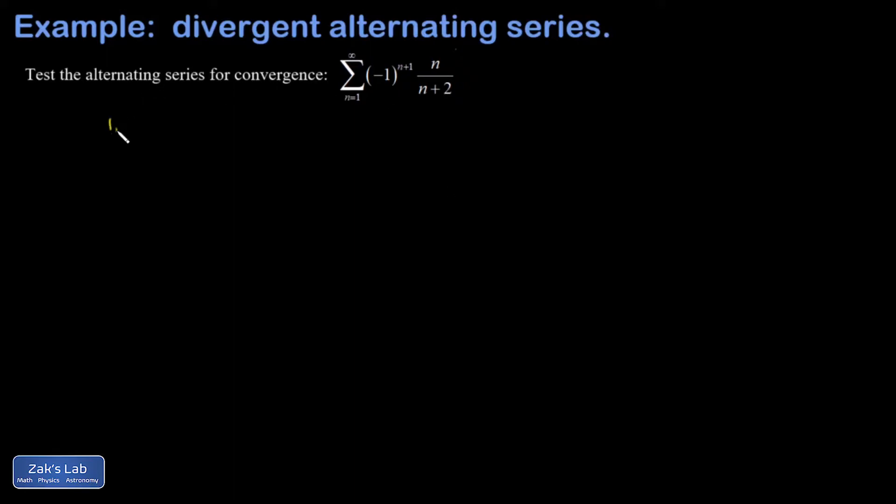So if you recall the alternating series test, if you can show that the next term is less than or equal to the previous term and that the large n limit of the terms goes to zero, then you've got a convergent alternating series.